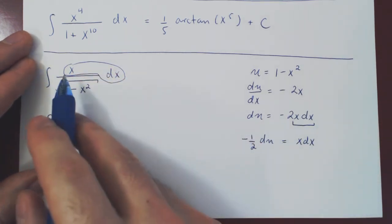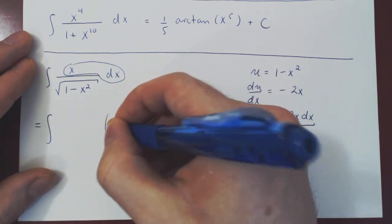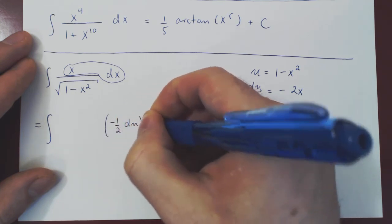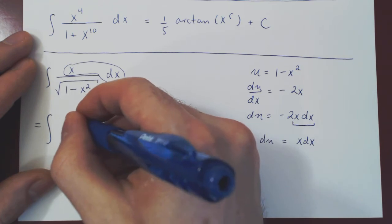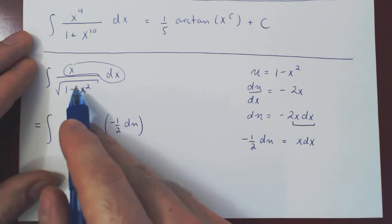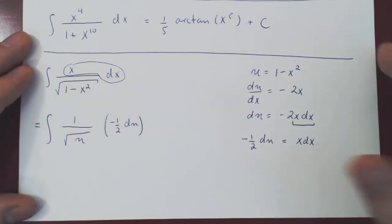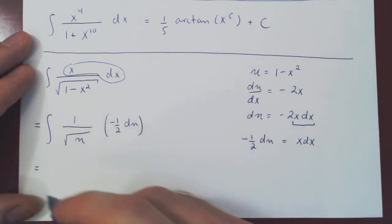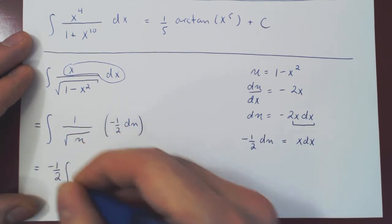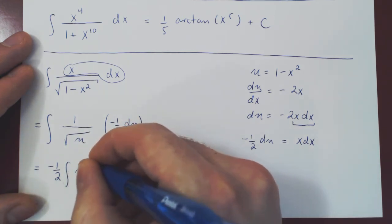And now we can replace. We are multiplying by x dx, which is negative 1 half du. And we have 1 over the square root of 1 minus x squared. But 1 minus x squared is simply u. And this now is a trivial integral. Pull the negative 1 half up front as it is a scalar multiple. 1 over root of u. Well, the root of u is u to the 1 half. And if you bring this back up to the numerator, the power of 1 half becomes negative 1 half.